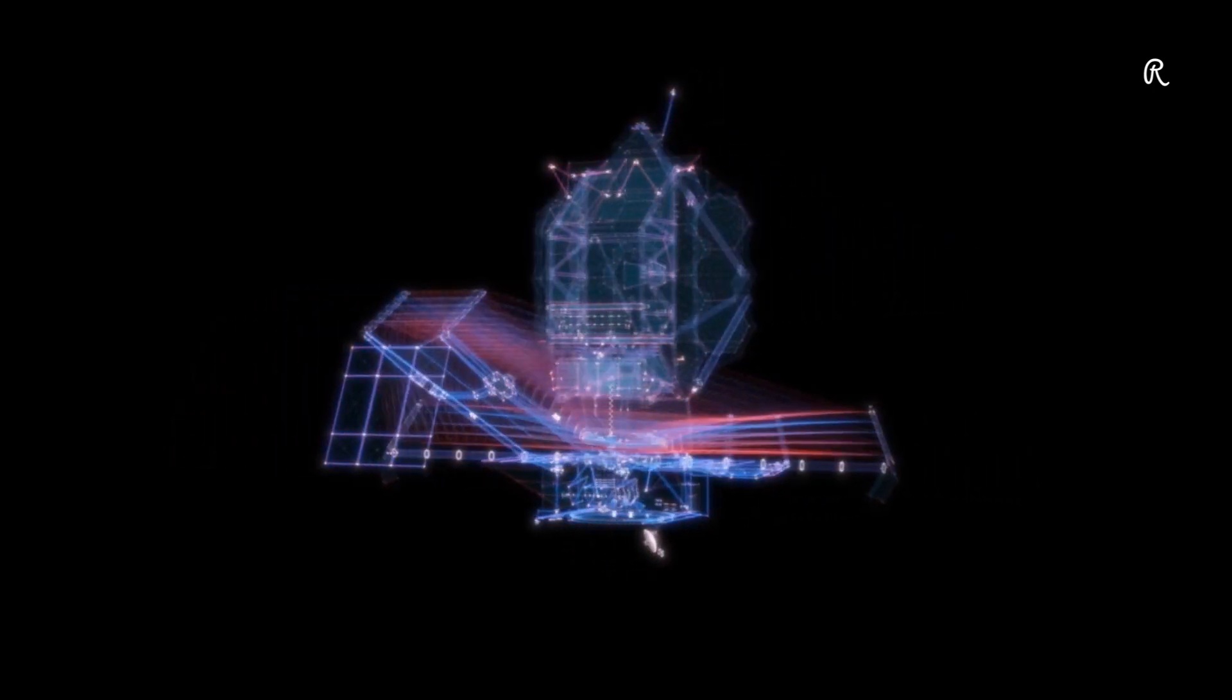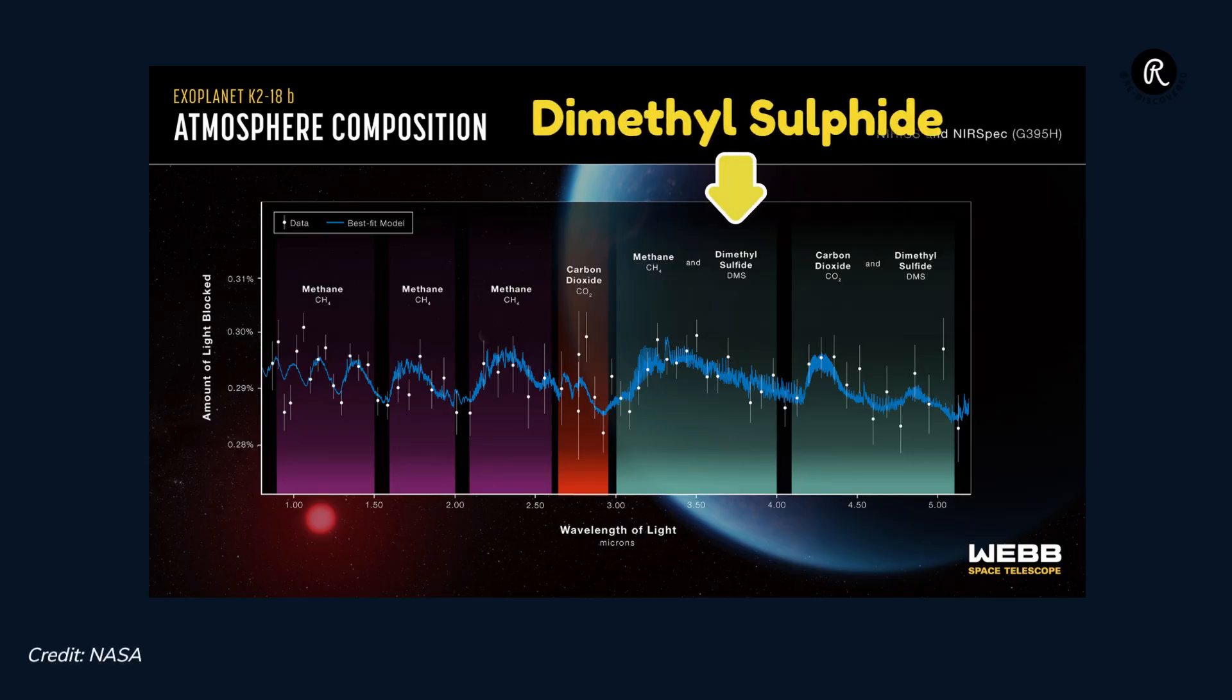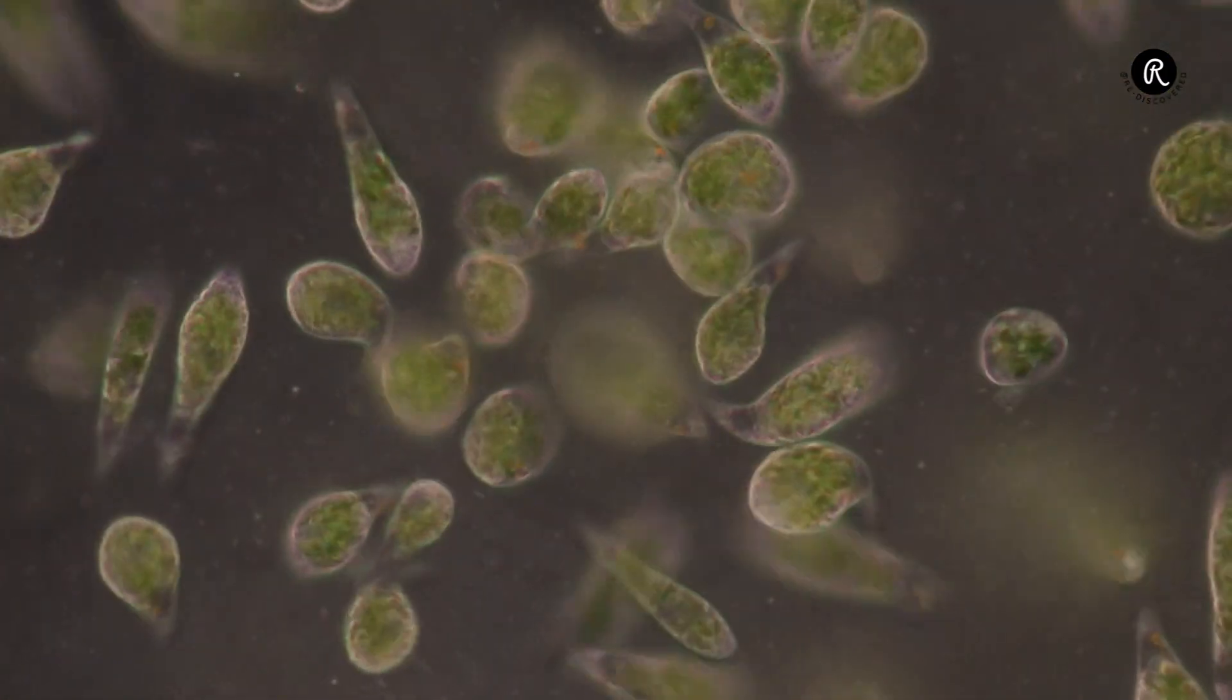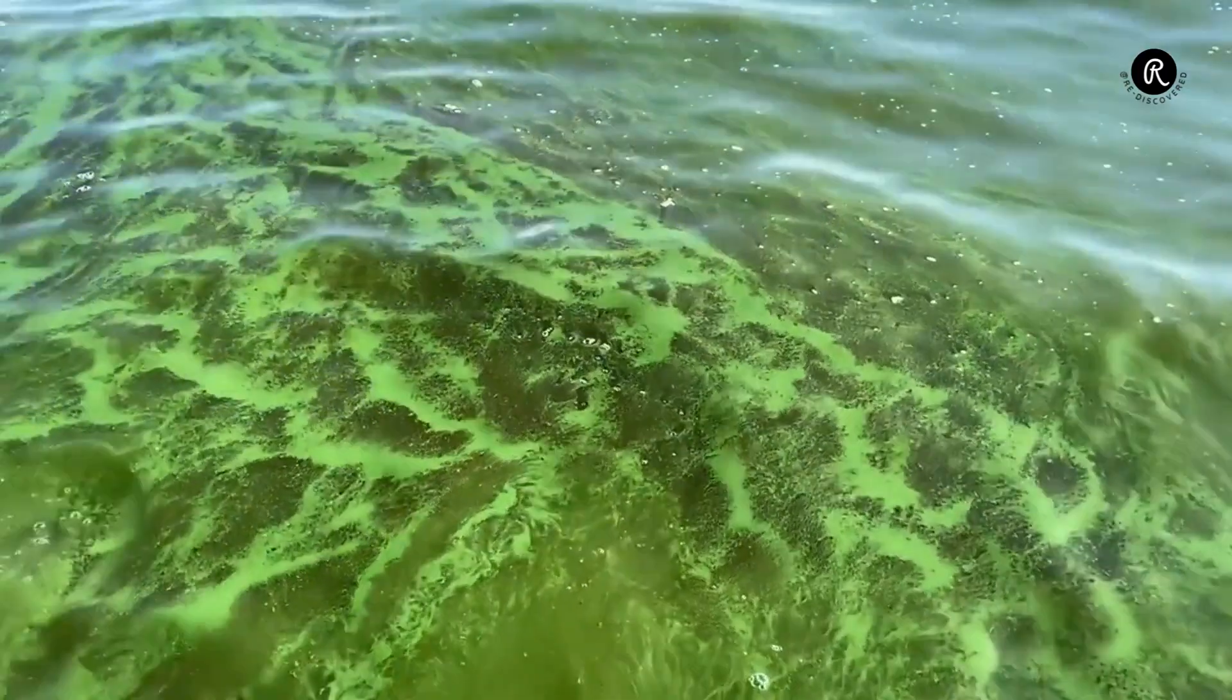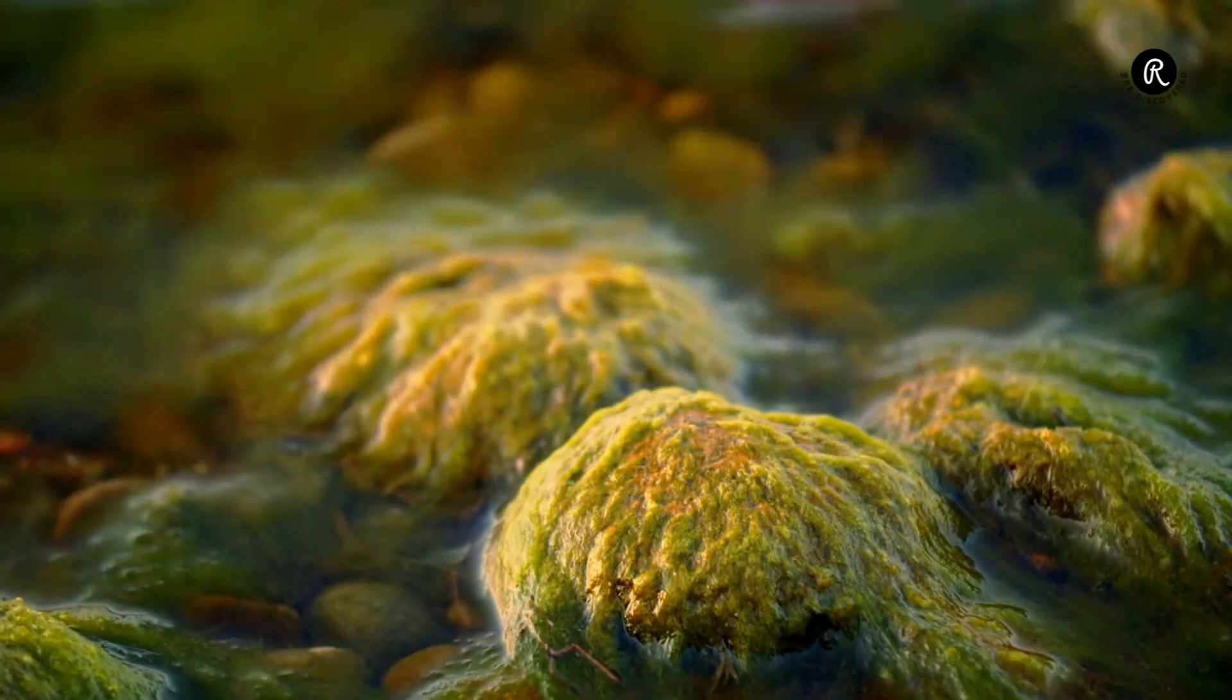The initial Webb observations indicate a possible detection of a molecule called dimethyl sulfide or DMS. On Earth, this is only produced by living organisms. The bulk of the DMS in Earth's atmosphere comes from phytoplankton in marine environments.